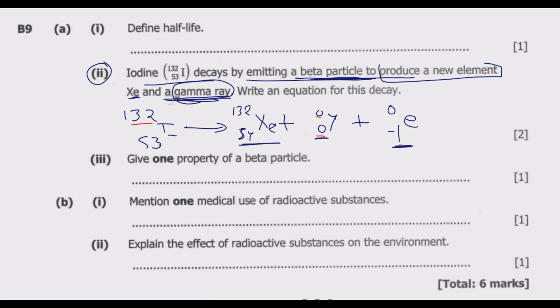Then part 3, give one property of a beta particle. So if you look at the properties of the beta particle, there are a number of them. The key ones are three. You have one that the fact that it is negatively charged. So the beta particle is just an electron.